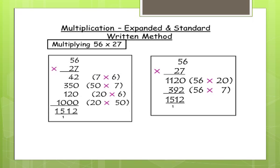Here you can see two different multiplication by using expanded written method. Multiplying 56 by 27. Both are two digit numbers. When you are multiplying, first multiply by the unit place number.